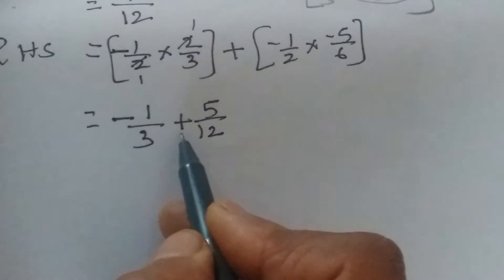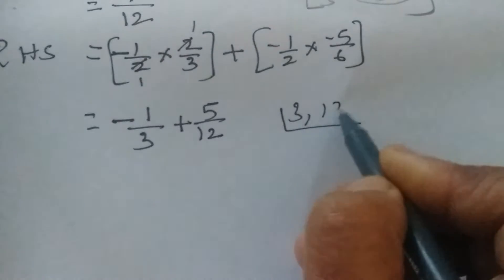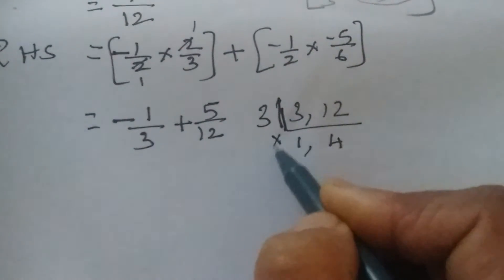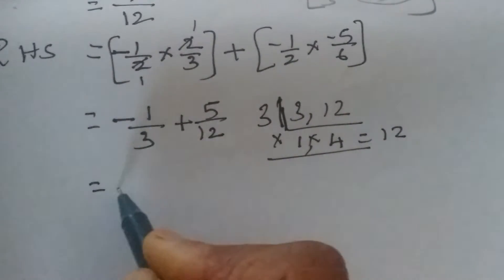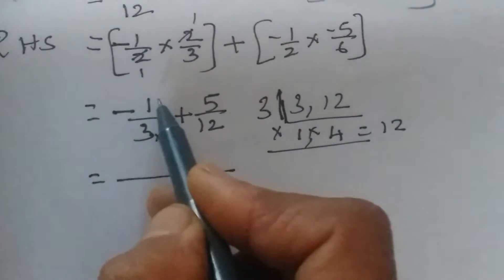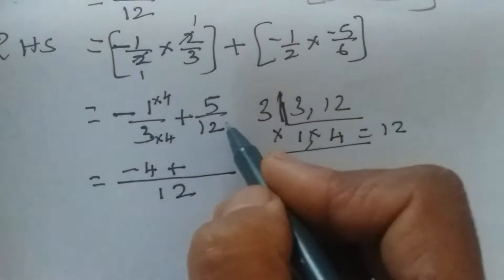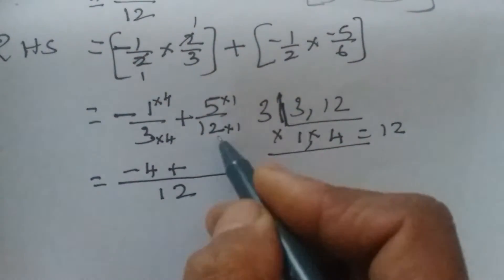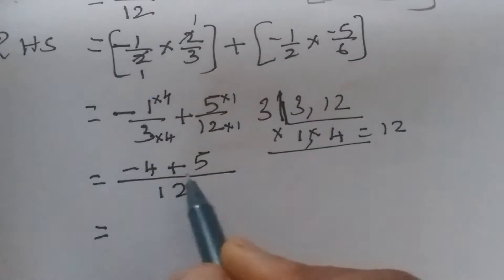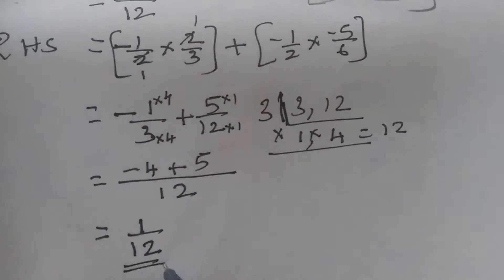Now we add −1/3 + 5/12. For addition, we need LCM. LCM of 3 and 12 is 12. So −1/3 becomes −4/12. Now: −4/12 + 5/12. Signs are different, so subtract: 5 − 4 = 1, sign of the greater number is plus. RHS = 1/12.